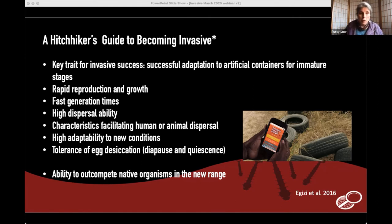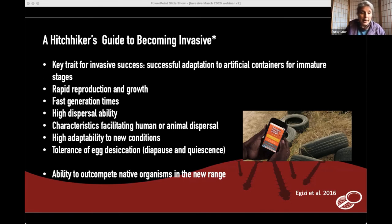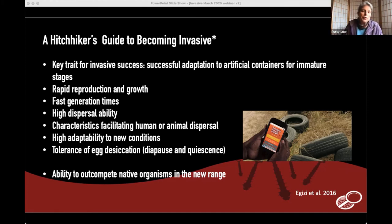A key feature of Aedes aegypti, Aedes albopictus, and the new invasive Aedes vitatus is that their eggs can tolerate drying out, allowing them to travel in a dormant state and emerge when they reach water. If they can out-compete native organisms in their new range — which is the case with many of these invasive species — we have a serious problem, and that's what we're addressing with the Mosquito Habitat Mapper.